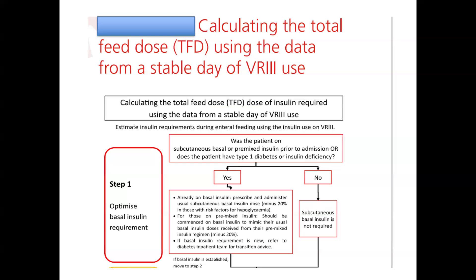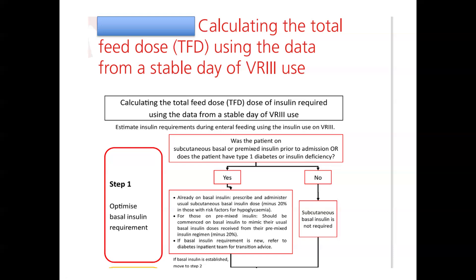Step one: is the patient on subcutaneous basal or premixed insulin prior to admission, or does the patient have type 1 diabetes or insulin deficiency? If yes and the patient is already on basal insulin, prescribe and administer the usual subcutaneous basal insulin minus at least 20% to avoid hypoglycemia during hospital admission. If the patient is on premixed insulin, commence ideally on a basal insulin mimicking the usual basal doses, again minus 20%. If basal insulin is totally new, refer to the diabetes inpatient team. If the patient was not previously on insulin or is not type 1 diabetic or does not have insulin deficiency, subcutaneous basal insulin is not required.